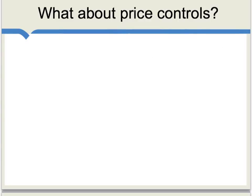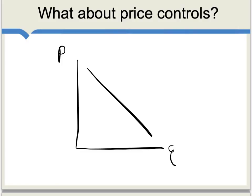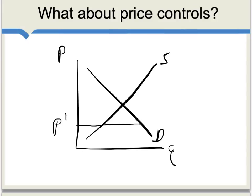Smith also considers putting price controls on corn, and he has a pretty clear argument that this leads to a shortage — that not enough corn will be brought to market. In terms of a modern picture, we can draw it this way: here's supply and demand, there's price, there's quantity, there's our demand curve, there's our upward sloping supply curve. A price control sets the price below market clearing, and what we find is that demand is quite high at that price while supply is relatively low — and this amount is the degree of shortage. This is bad for both producers and consumers in typical market settings.